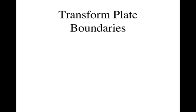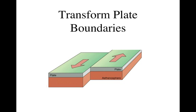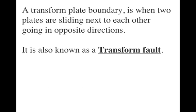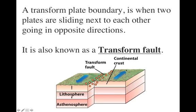Our next plate boundary interaction is called a transform plate boundary. We have two plates and they are going in opposite directions — not pulling apart, just going in opposite directions. A transform plate boundary is when two plates are sliding next to each other going in opposite directions, and sometimes they call it a transform fault. So here we have two plates: one lithospheric plate is going this way, and one lithospheric plate is going the other way, and we have in between what is called a transform fault.